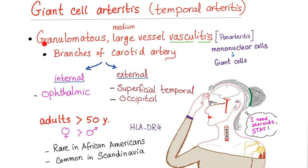It's a granulomatous medium or large vessel vasculitis — inflammation of medium or large sized vessels. Histologically, it's a pan-arteritis characterized by the presence of mononuclear cells which join together and form giant cells.